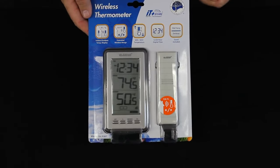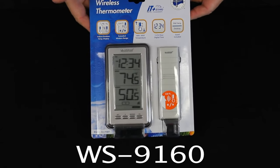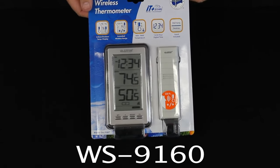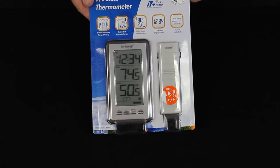I'm Terry with Cross Technology and this is the 9160 wireless thermometer unit. Typically you'll find the package in a blister pack like this and you'll notice we have a decal showing that it has a 330-foot range.